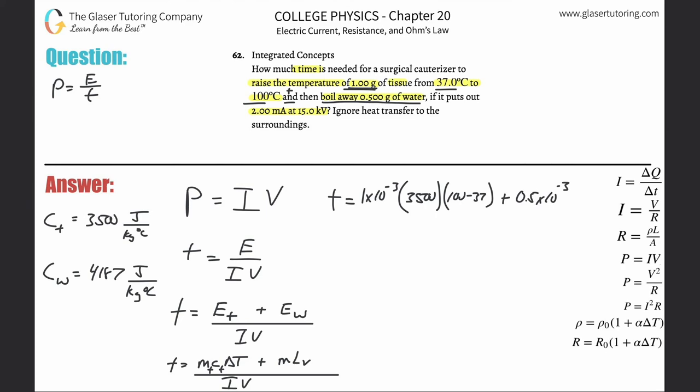This is going to be 0.5 times 10 to the minus 3 kilograms because we need it in kilograms, and then multiplied by then the latent heat of vaporization of water. That's memorized, it's going to be—you look it up in the book, I think it is 2256 kilojoules per kilogram. This is not fine, we need it in joules, so you got to multiply this whole thing by 10 to the 3, and when you do that it works out to be 2.256 times 10 to the 6th joules per kilogram. So I'm running out of space, so all I'm going to do is just highlight this and you would plug it in. And now let's just calculate: 1 times 10 to the minus 3 multiplied by 3500 multiplied by then parenthesis 100 minus 37, plus 0.5 times 10 to the minus 3 times 2.256 times 10 to the 6th.